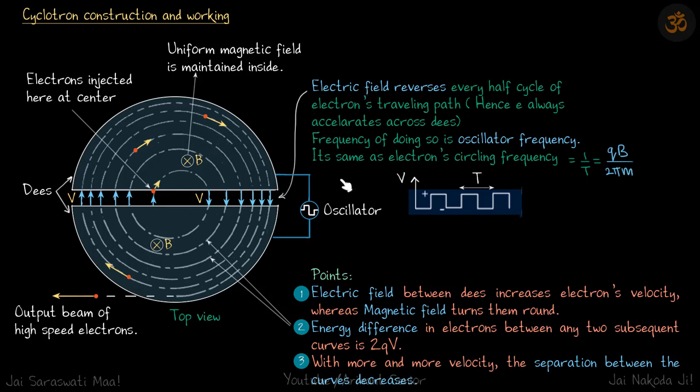Let's go through these points. Electric field reverses every half cycle of the electron's traveling path. When the electron was crossing this region, the electric field should be downwards, and by the time it reaches here, the electric field needs to be upwards. Then only will it accelerate here and here.